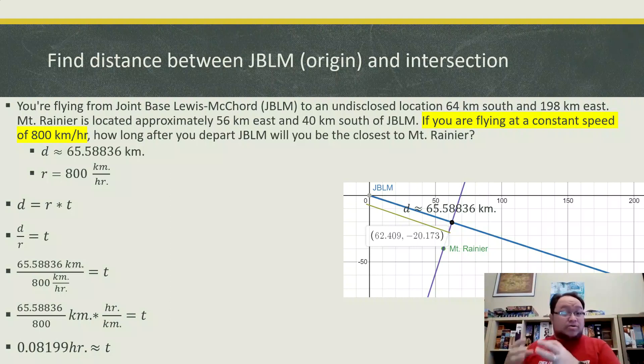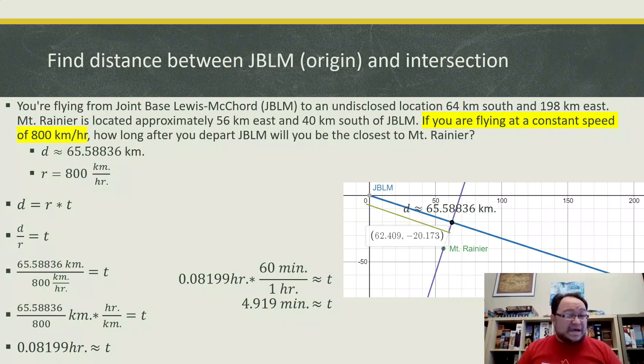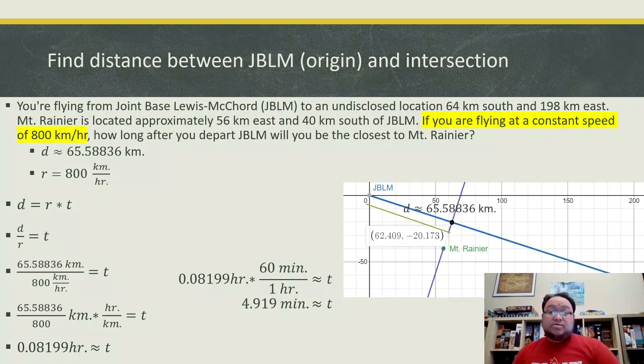So I'm going to take those hours. And since I know there are 60 minutes in an hour, I'm going to essentially multiply our 0.08199 by 60. And then I'm going to cancel out those hours on top and bottom, leaving just minutes. So how long will it take? It'll take 4.919 minutes, just shy of five minutes, for us to start our flight at JBLM to get to the closest we'll be to Mount Rainier.